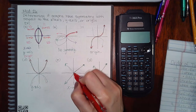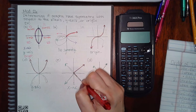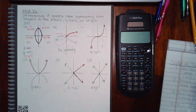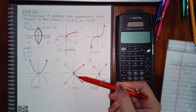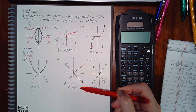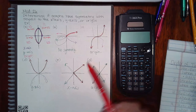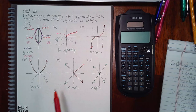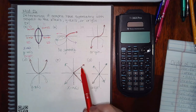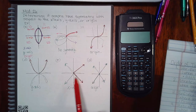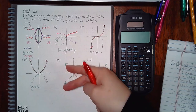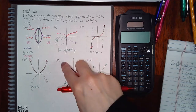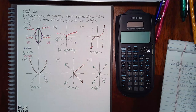For this graph, flipping over the x-axis does land onto itself, so it has x-axis symmetry. Flipping over the y-axis gives a green graph which does not land on the original, so no y-axis symmetry. Doing both flips — flip over the y-axis and then the x-axis — still ends up with that green graph that does not land on the original, so no origin symmetry.